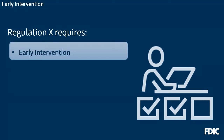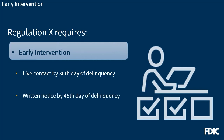Under the early intervention requirement, large servicers must establish, or make good-faith efforts to establish, live contact with borrowers by the 36th day of delinquency, and, if appropriate to a borrower's situation, promptly inform the delinquent borrower of loss mitigation options that may be available. Large servicers are also required to provide delinquent borrowers with written information about any available loss mitigation options by the 45th day of delinquency. Large servicers may use the model language from the appendix to Regulation X in the written notice. Additional information regarding early intervention and delinquency is available in Regulation X and on the CFPB's website.